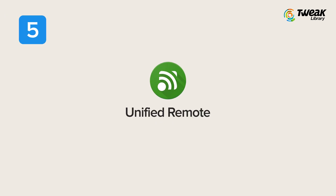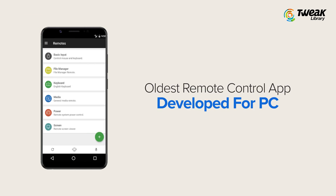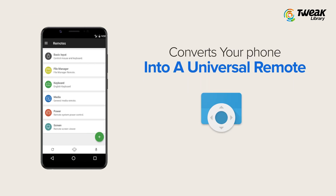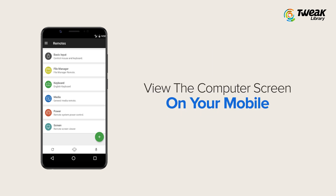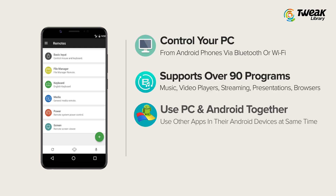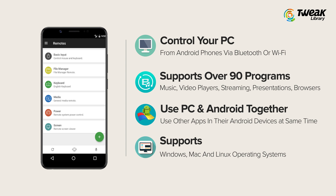On number 5, Unified Remote. One of the oldest apps developed to carry out remote control between devices is Unified Remote. It converts the phone into a universal remote app, allowing users to view the computer screen on their mobile. Control your PC from Android phones via Bluetooth or Wi-Fi. It supports over 90 programs including music and video players, live streaming, presentations, browsers, and others. You can control the PC and use other apps on your Android device at the same time. Supports Windows, Mac, and Linux operating systems.